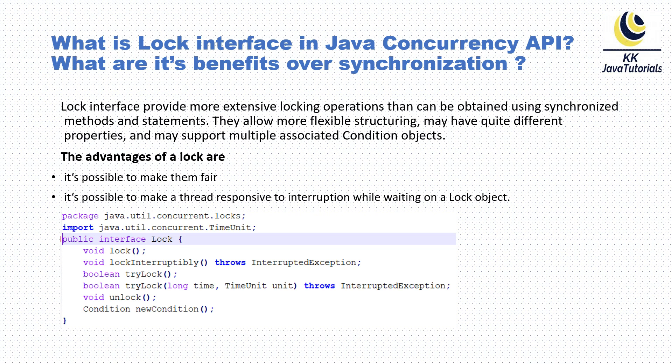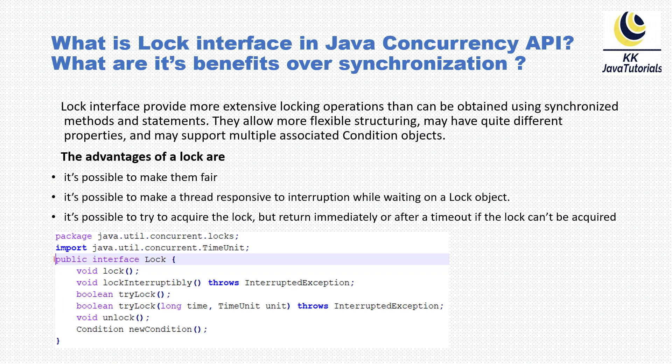The next advantage is that it is possible to make a thread responsive to interruption while waiting on the lock object. You can do this by using the method lockInterruptibly(). The first method, lock(), can be called before entering a critical section to acquire the lock.